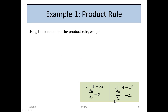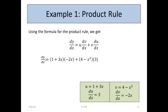Now we'll use the product formula: dy/dx = u·(dv/dx) + v·(du/dx). We have values for u, dv/dx, v, and du/dx. Substituting: dy/dx = (1 + 3x)(−2x) + (4 − x²)(3). This is really just an algebraic expression now, and we can multiply in.